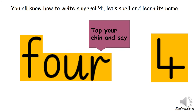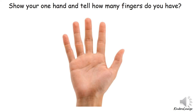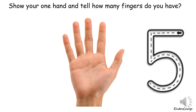What comes after number four? Show your one hand and tell how many fingers you have. I can count: one, two, three, four, five — we have five fingers on one hand! So it's number five, and that's how the numeral five looks like.